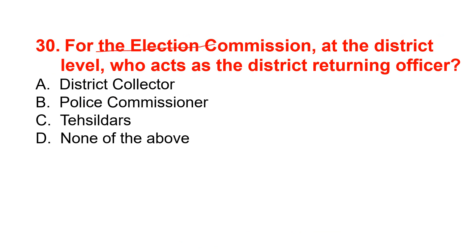For the Election Commission at the district level, who acts as the District Returning Officer? The correct option is District Collector, option A. The returning officer of a parliamentary or assembly constituency is responsible for the conduct of elections in those constituencies as per the Representation of the People Act 1951.